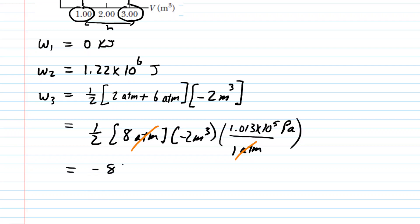And so we get negative 810,400 joules. Divide that by 1,000 to get it into kilojoules. It's just a more convenient unit. You'll get negative 810.4. That'll be in kilojoules.